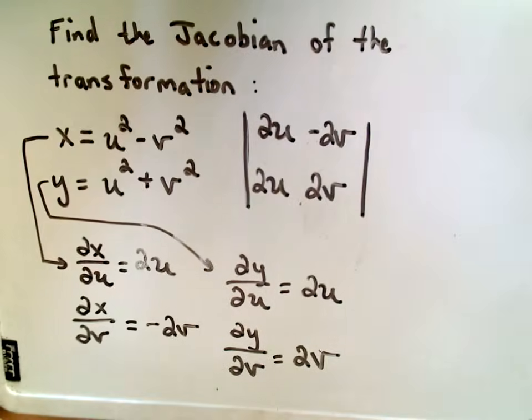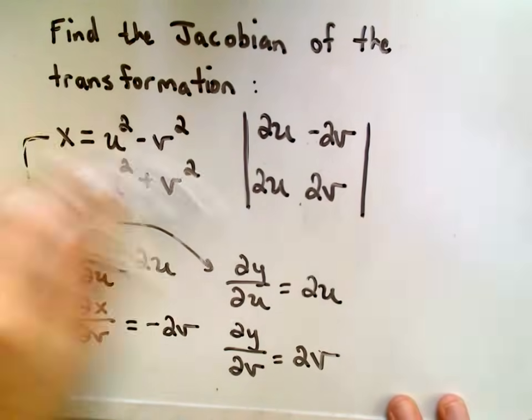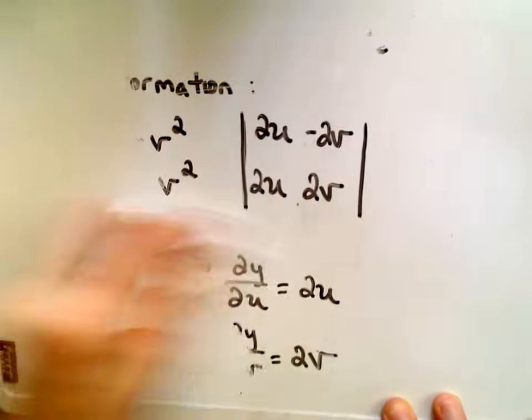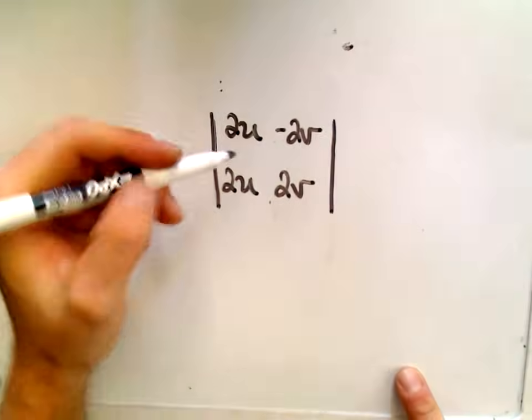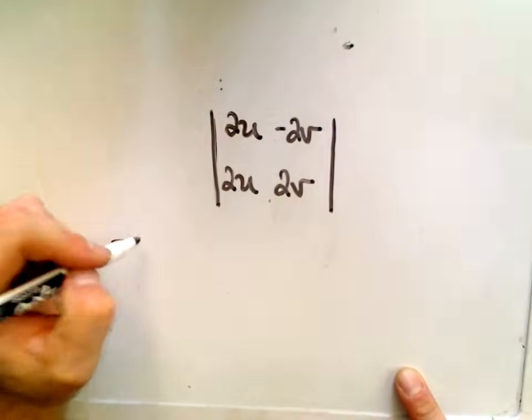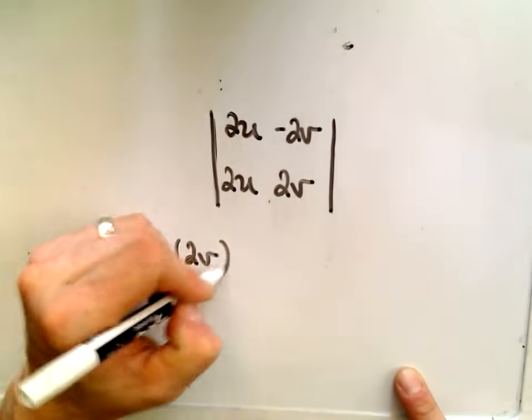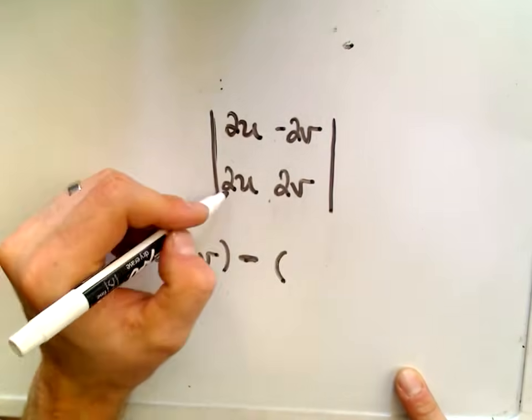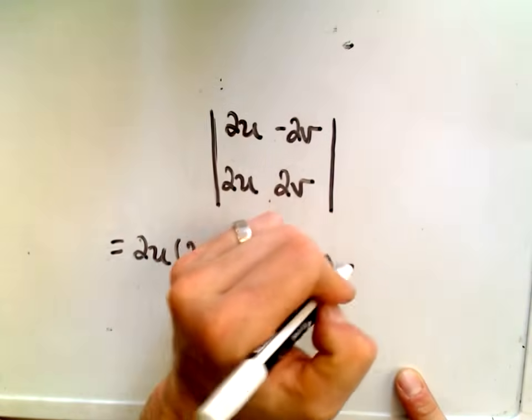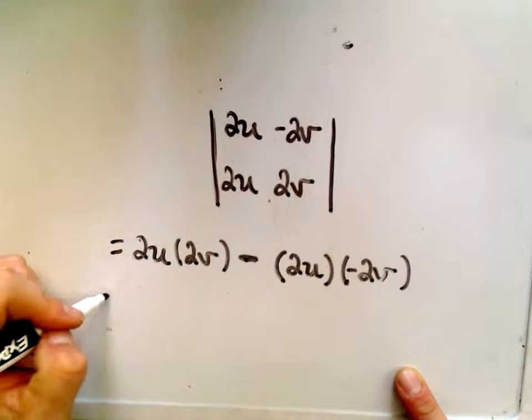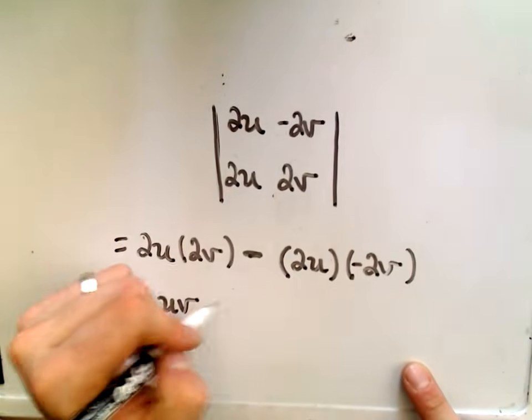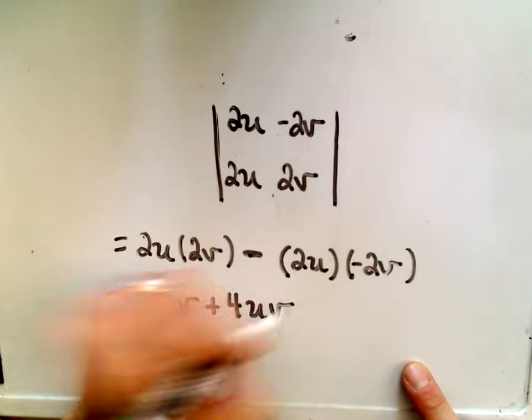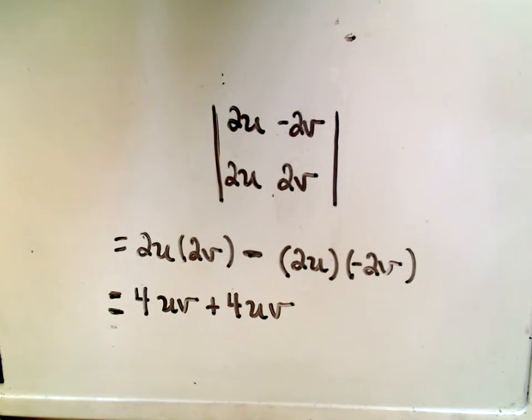All right, so now all we're doing is basically just computing a determinant here. So now we're really almost there. So to compute the determinant, remember, we just take the top left entry, multiply it by the bottom right entry. We put a minus in between, and then we take the bottom left entry, and multiply that by the top right entry. It looks like to me we get 4uv plus 4uv.